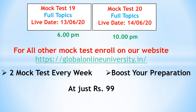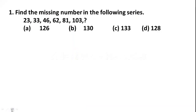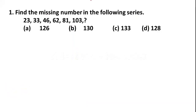Question 1: Find the missing number in the following series: 23, 33, 46, 62, 81, 103. The next number would be: Option A: 126, Option B: 130, Option C: 133, Option D: 128. Now we will find the pattern.